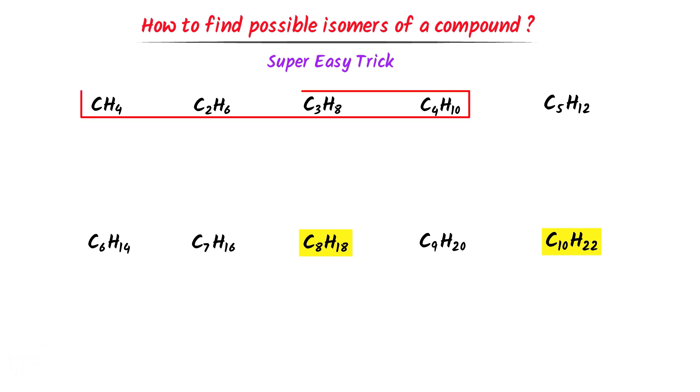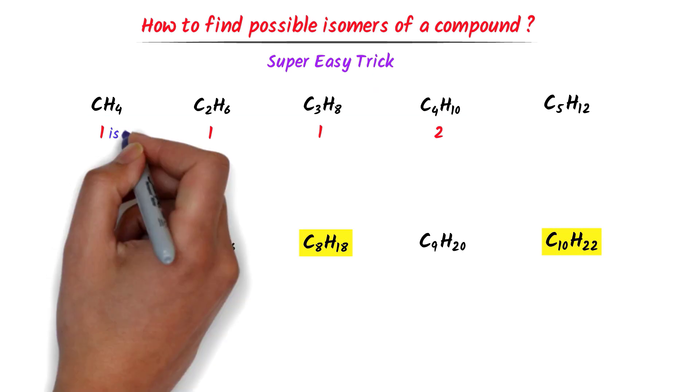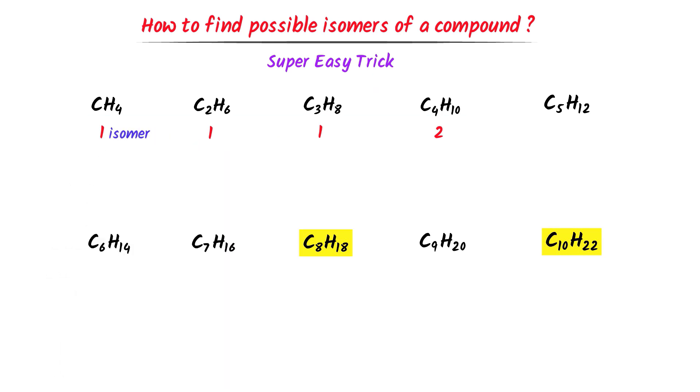In case of the first 4 members, I write 1112. It means that methane has 1 isomer, ethane has 1 isomer, propane has 1 isomer, and butane has 2 isomers.